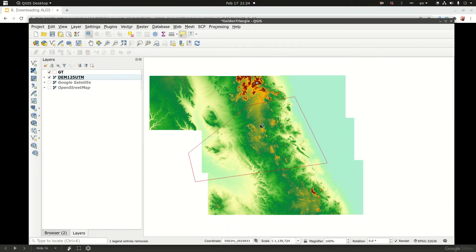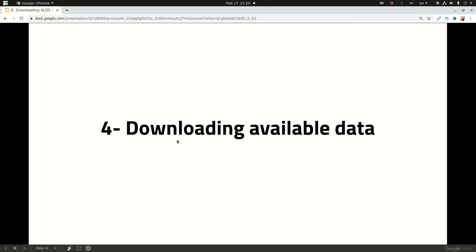And now I have my terrain data for my area of interest. I can start doing the magic and it's at 12.5 meter resolution, which is, I would say, for almost 10,000 square kilometer area, it's not bad. Let's go back to the presentation.